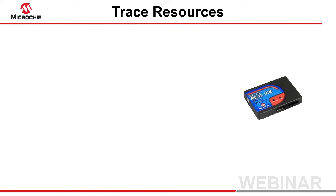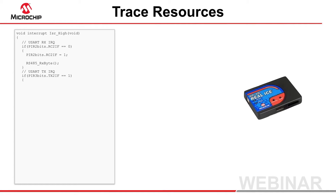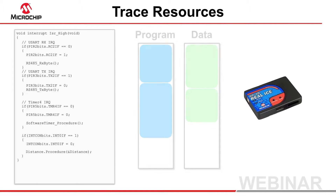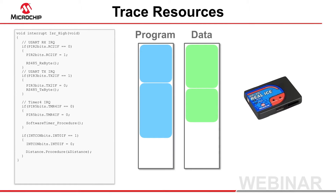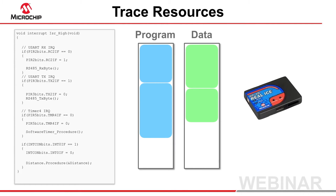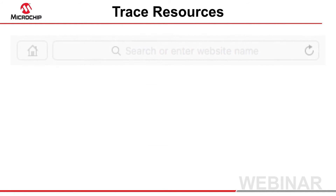The MPLAB RealICE In-Circuit Emulator's instrumented trace and log facilities are useful when you need detailed information concerning the execution path of your code, or how the value of expressions change over time. If you plan to use instrumented trace and log, simple macros must be added to your program to initiate a data transfer to the debugger. Each macro consumes a small amount of additional program memory, and uses larger data transfer routines, which are also linked just the once into your code. Note that devices which support instruction trace, as opposed to instrumented trace, do not require these macros, and code size is unaffected when using these features.